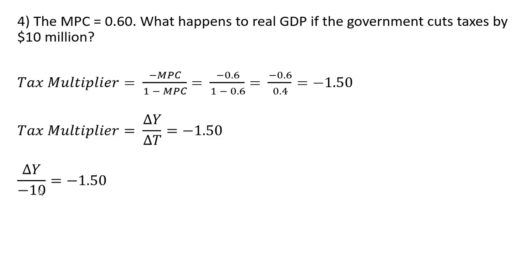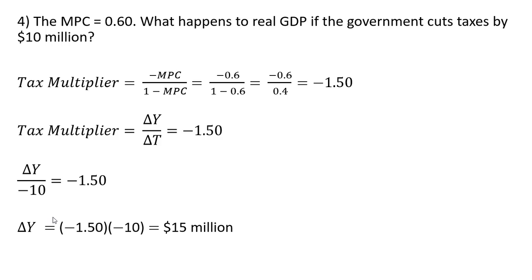The change in taxes in this example is minus 10 for the $10 million tax cut, so we put minus 10 in for change in T. Now we solve for change in Y by multiplying both sides through by minus 10. The change in real GDP, the change in Y, equals 15 million.